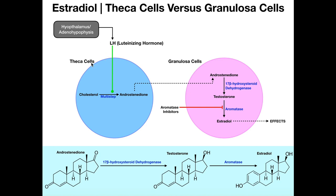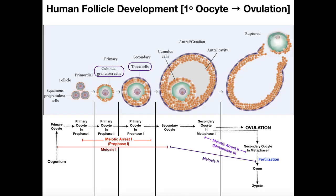The theca cells are responsible for making the androgen androstenedione from the parent steroid cholesterol. They shuttle androstenedione over to the neighboring granulosa cells, where it is converted into estradiol — the major estrogen. This is how the granulosa cells manufacture estrogen, which helps maintain oogenesis. Those theca cells only appear once we reach the secondary follicle phase, and at this stage we still have a primary oocyte arrested in prophase I.